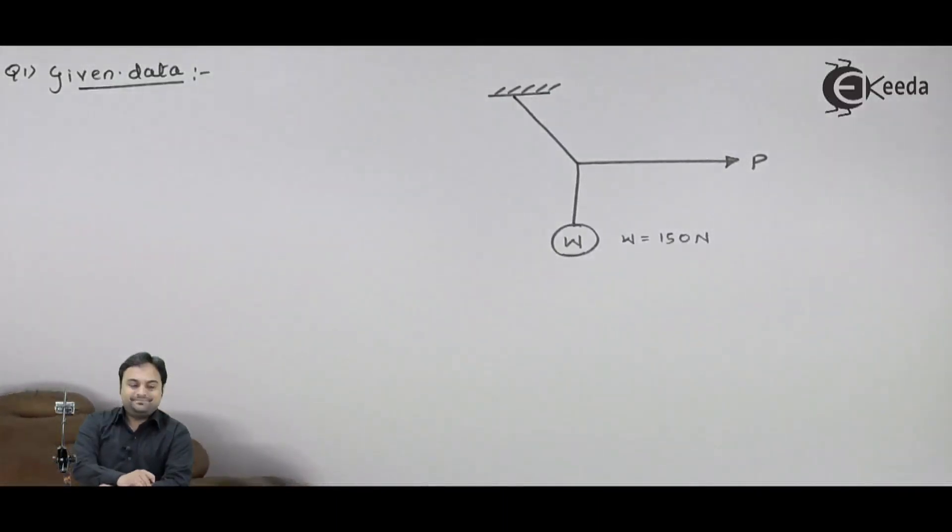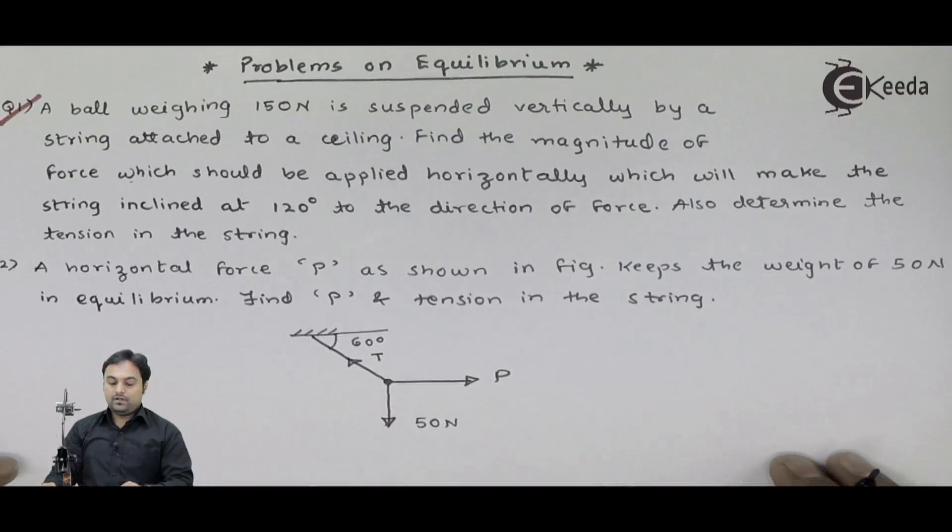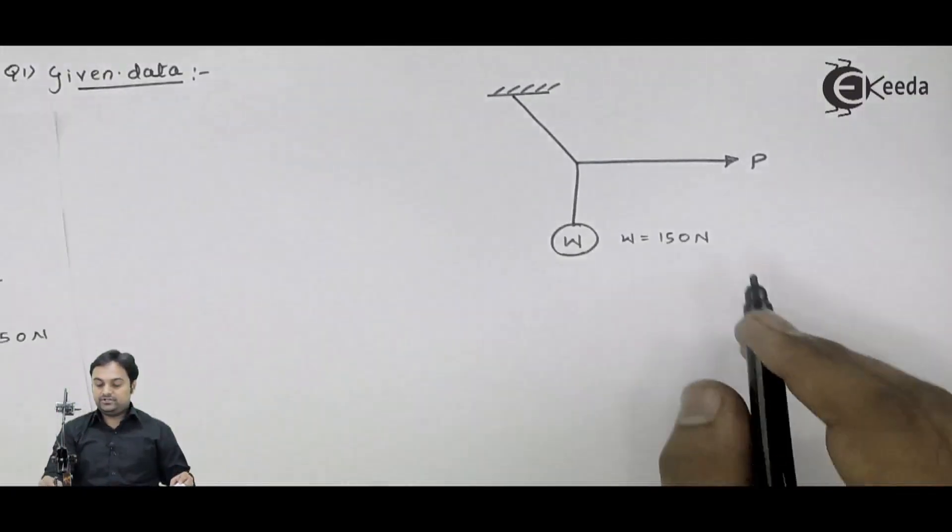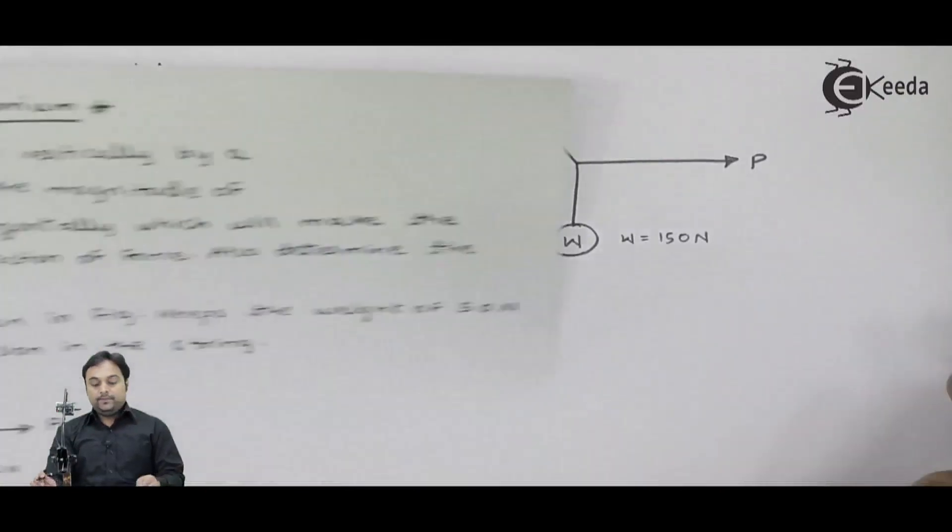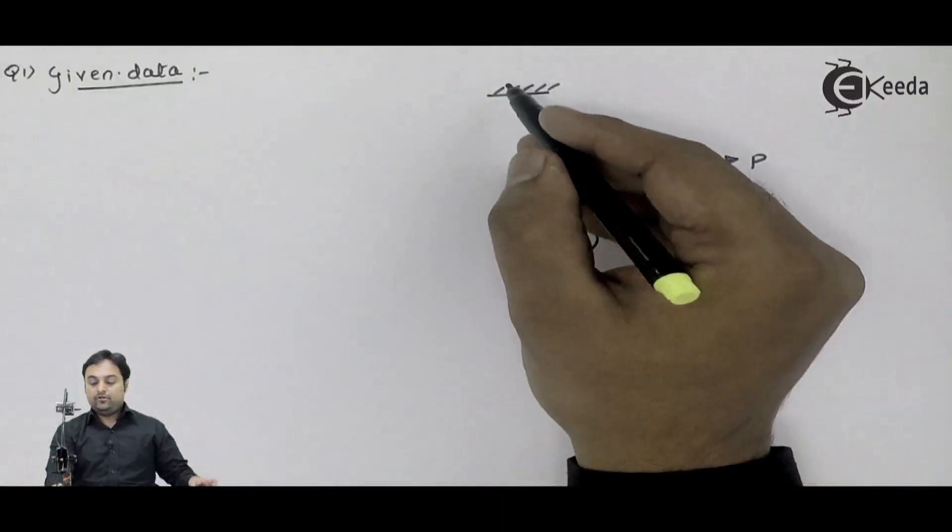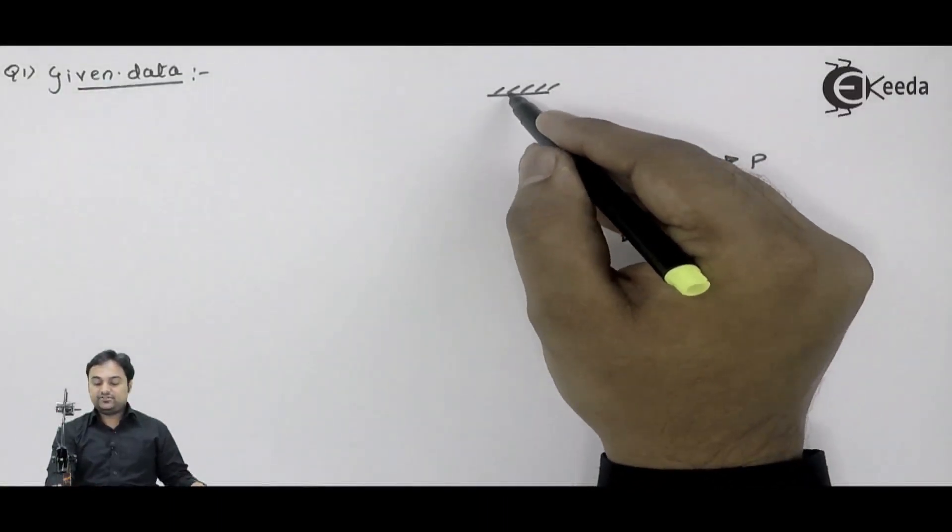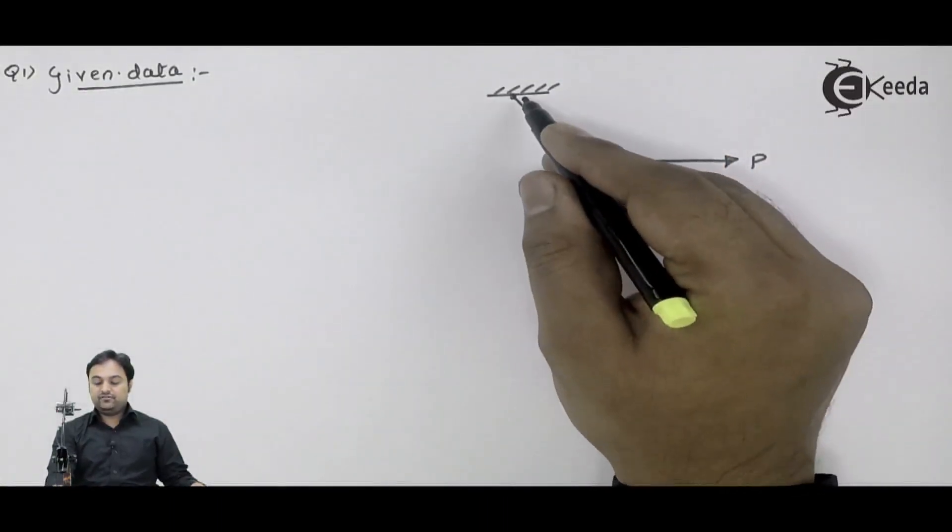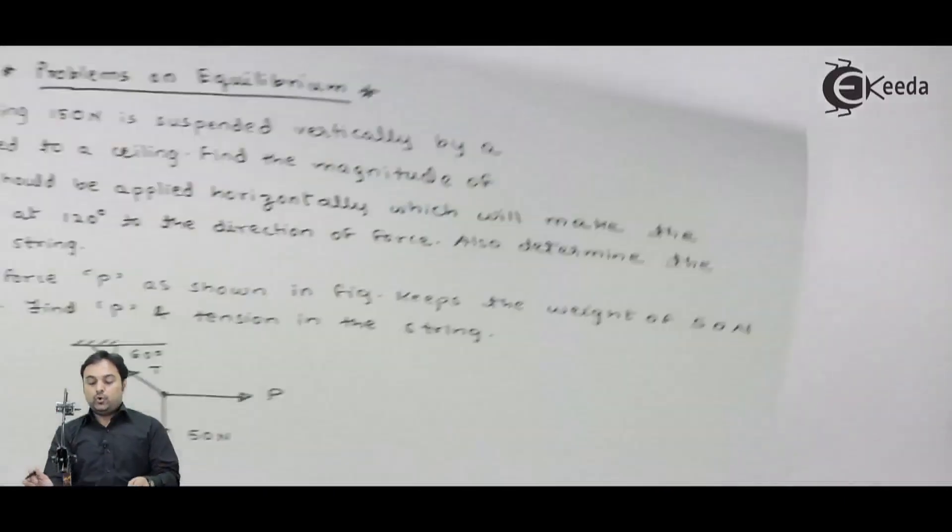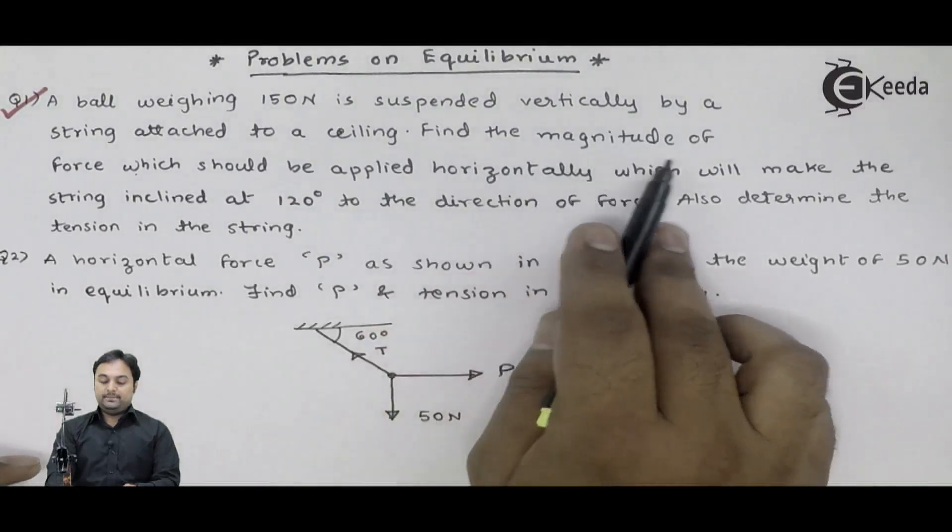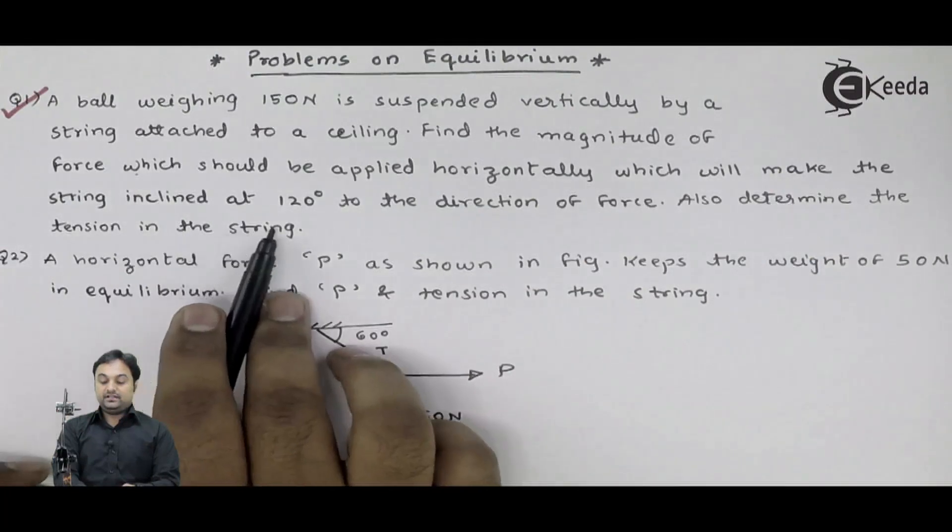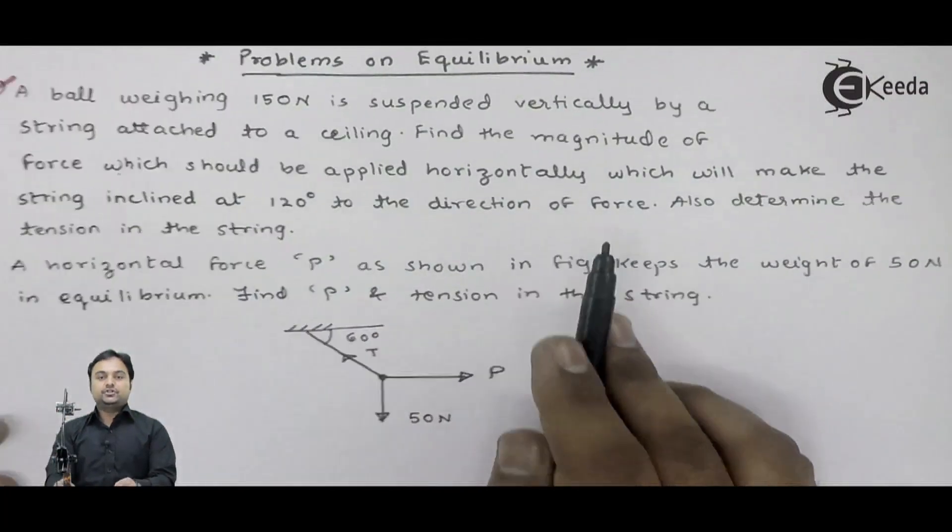So again I will read the question. A ball weighing 150 Newton is suspended vertically by a string attached to a ceiling. From a ceiling there is a string attached. This string was initially straight, it was vertical. So find the magnitude of force which should be applied horizontally which will make the string inclined at 120 degree to the direction of force.